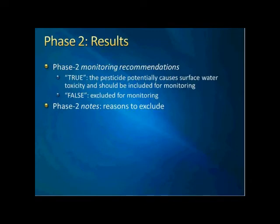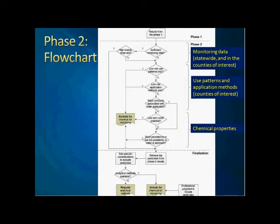As shown before, there is just one additional column attached to the phase one results, including two recommendation values. There is another output file for the reason to include or exclude a pesticide. Here shows the flow chart. I summarize basically the step-by-step procedure for the evaluation. For example, the first question is whether there is sufficient monitoring data — yes goes one way and no goes another. Basically we have three groups of evaluation based on monitoring data, use context, application method, and finally chemical properties.